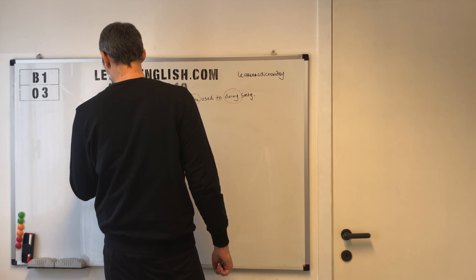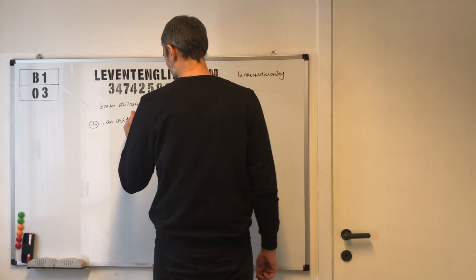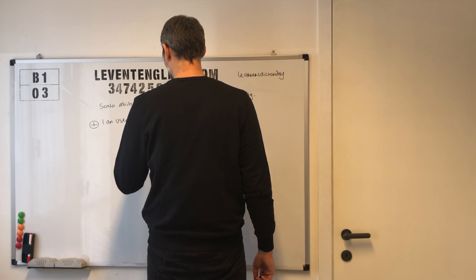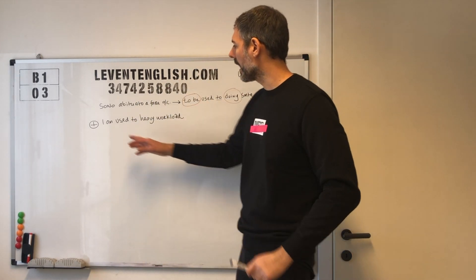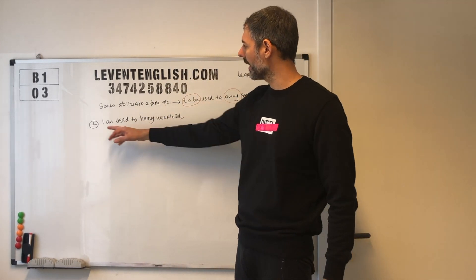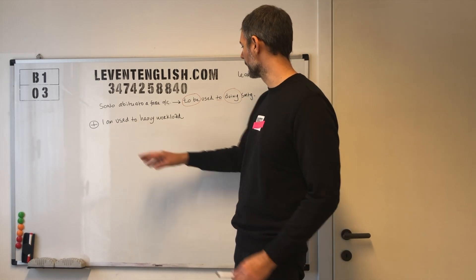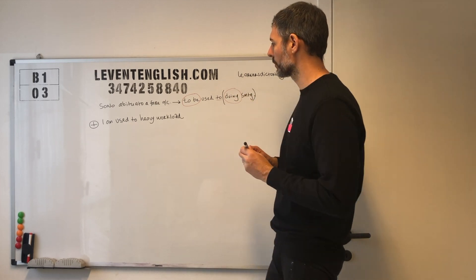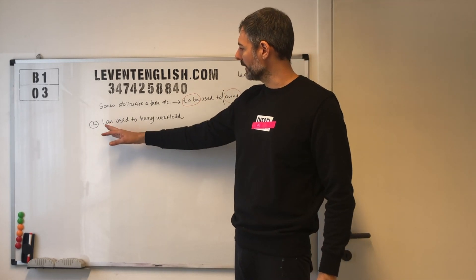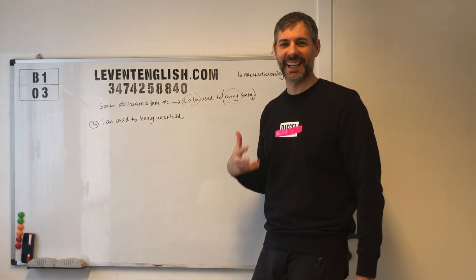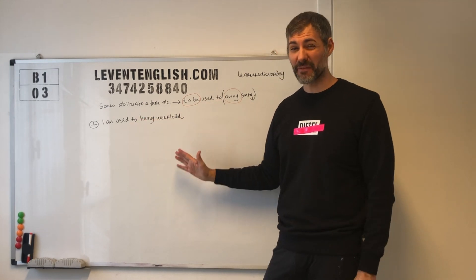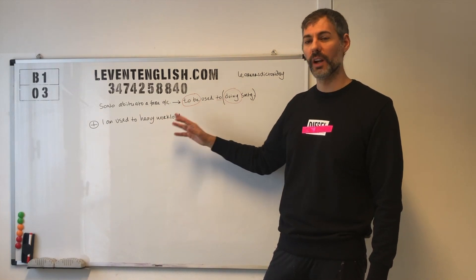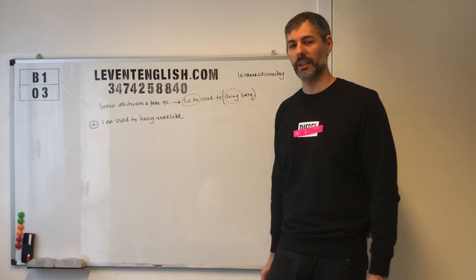Vediamo un paio di esempi. I am used to heavy workload. Vedete, verbo essere, I am used to heavy workload. In questo caso non ho messo un verbo. Io sono abituato a pesanti carichi di lavoro, quindi sono abituato a lavorare tanto. I'm used to heavy workload.